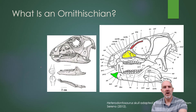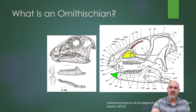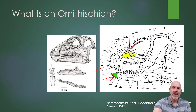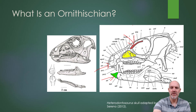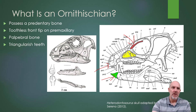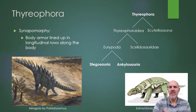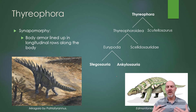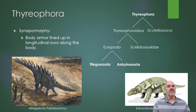So what is an ornithischian? Again, just to keep emphasizing: there's that predentary bone. We've got that premaxilla area which doesn't have any teeth in it. There's the palpable bone, but the predentary bone and the backward-facing pubis are the key features. We're in Thyreophora. Thyreophora is another grouping, and it means armor-bearer, and that's the synapomorphy for this group, as we talked about when we looked at the stegosaurs.